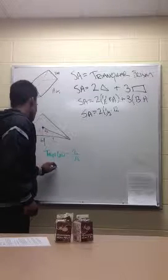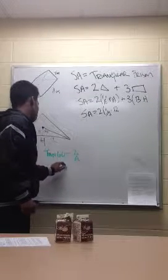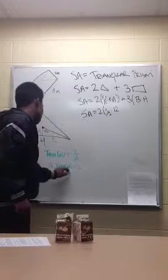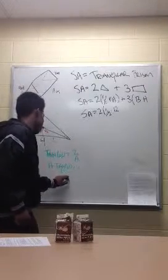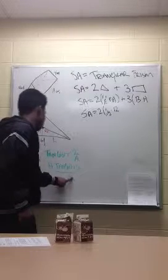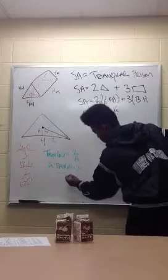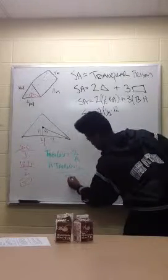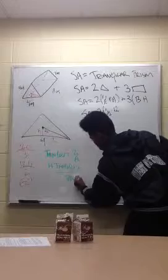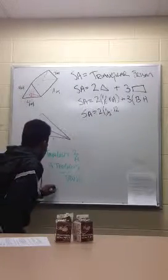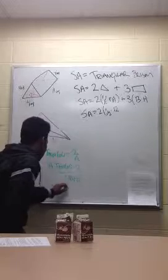A tan 60 equals 2, divide both sides by tan 60, and you get A equals 1.15.